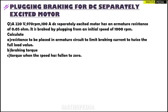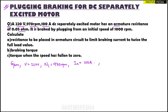In this video we are going to solve one problem based on plugging braking for a DC separately excited motor. A 220 volt, 970 rpm, 100 ampere DC separately excited motor has an armature resistance Ra of 0.05 ohm. It is braked by plugging from an initial speed of 1000 rpm, which we consider as N2.